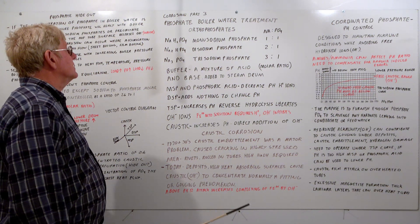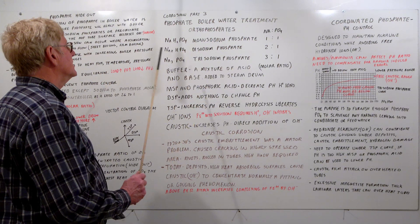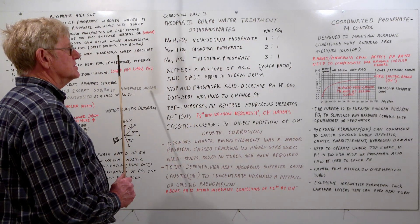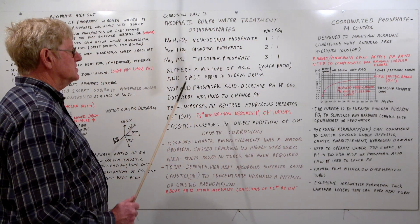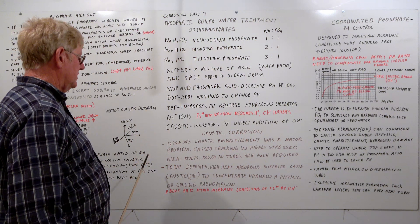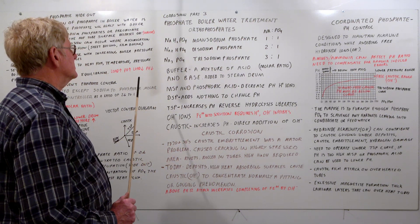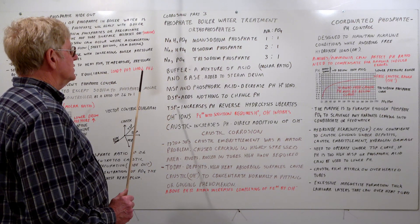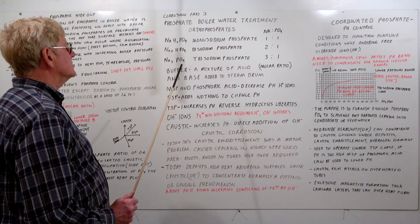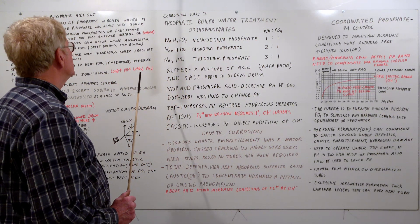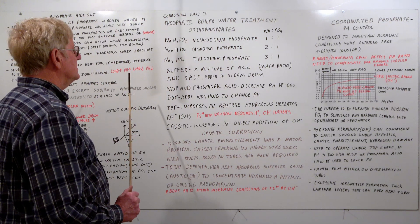It's our corrosion part three. We're dealing with phosphate boiler water treatment. First thing we'd like to say is a disclaimer: this is for information only. This is not the complete process of phosphate control. It's not meant to challenge your chemistry professionals or the people in charge of boiler water. It's just to give kind of an idea of what's going on and what to be aware of.